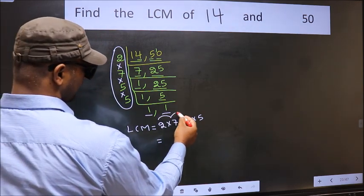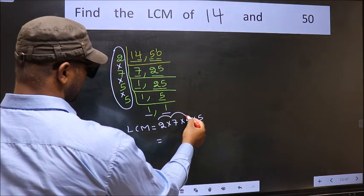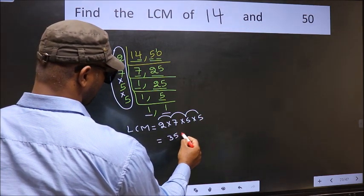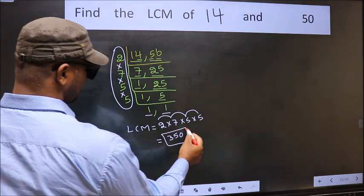2 into 7, 14 into 5, 70 into 5, 350. So, 350 is our LCM.